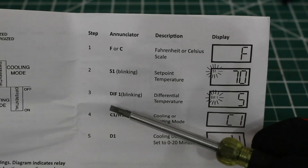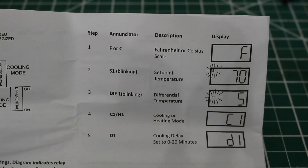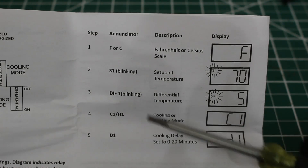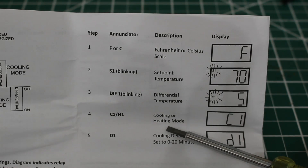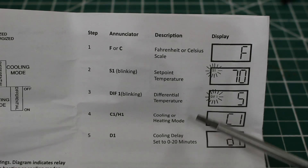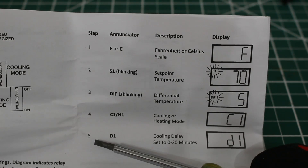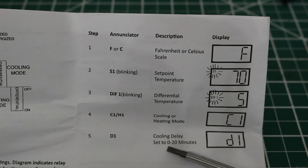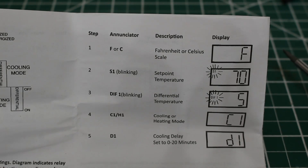Click Set and you're done with that. This is a universal control, so you could use it for a cooling or heating application. That brings us to step four — you're going to see C1 or H1. C1 stands for cooling and H1 stands for heating. Click Set on your desired application — cooling will be for refrigeration and air conditioning. Then step five is D1, which is your cooling delay. You can arrange it from zero to 20 minutes. I'd recommend zero or three minutes max.